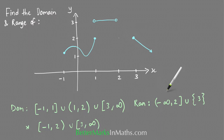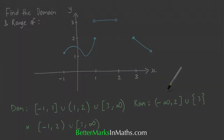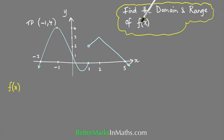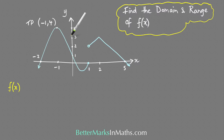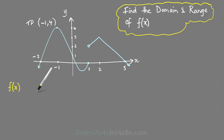In this next example you have to find the domain and range of f(x). This is the graph of f(x), and again it's a hybrid function — a graph made up of two separate functions, which is what makes it a hybrid function.